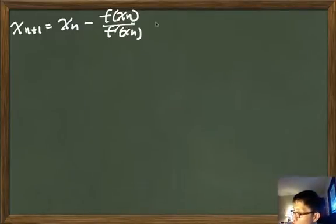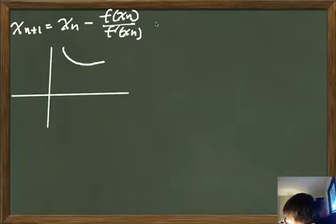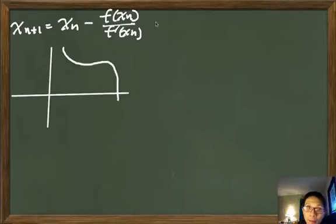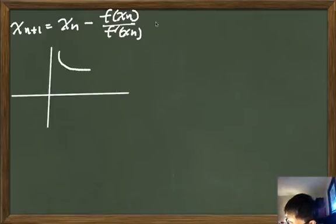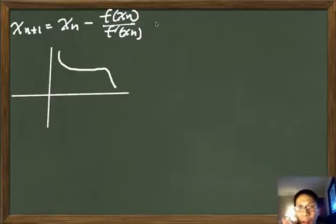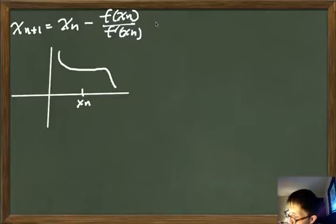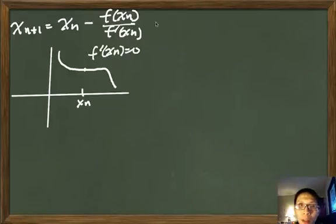Imagine you have a wild initial guess. We have an equation that looks like this, and we want to find the zeros. You have to pay attention to your first initial guess. If your initial guess is right here at x_n, the derivative f'(x_n) equals zero because it's a horizontal tangent.